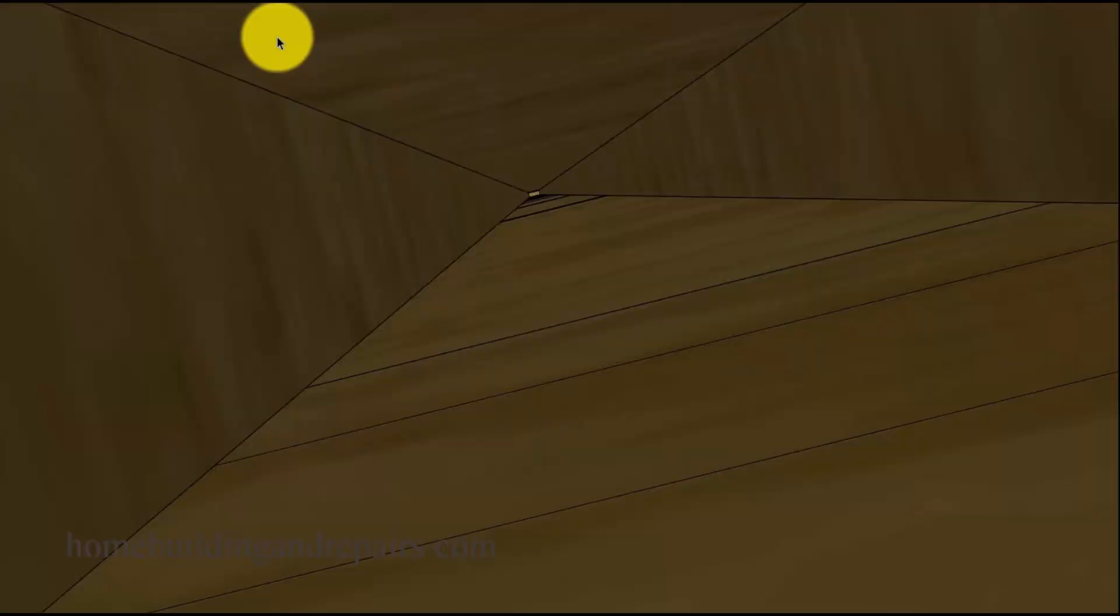Other than that, the 2x4 or whatever you're using for your strong back, and again these are blocking instead of blocking the trusses, these are going to prevent them from moving from the right or the left kind of a thing.